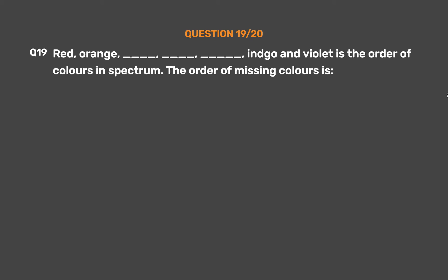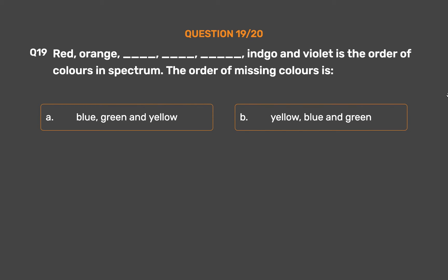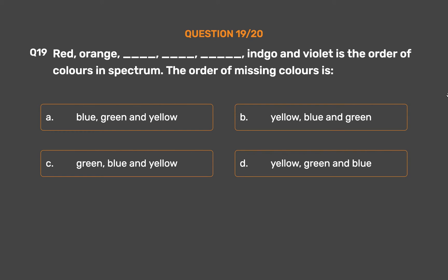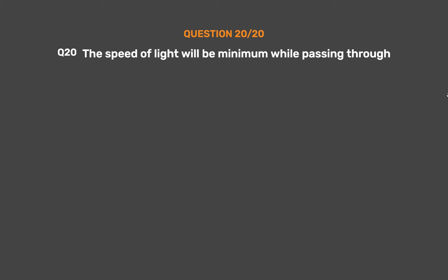Question number 19. Red, orange, __, __, __, __ and violet is the order of colors in the spectrum. The order of missing colors is: option A, blue, green and yellow; option B, yellow, blue and green; option C, green, blue and yellow; option D, yellow, green and blue. The correct answer is option D, yellow, green and blue.